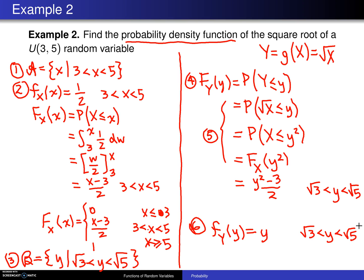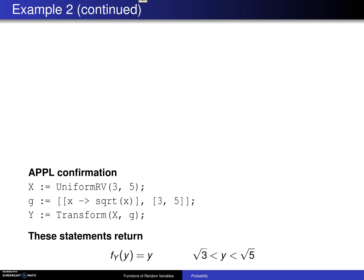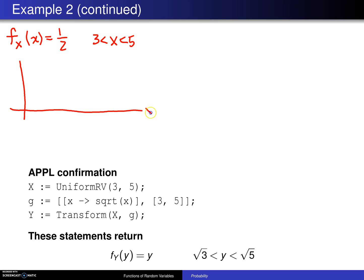On the next page there is a bit of geometry associated with what has happened here. The probability density function of X is 1/2 for x values between 3 and 5. Drawing the axes with tick marks at 1, 2, 3, 4, and 5, this probability density function looks like a flat line hovering at 1/2.